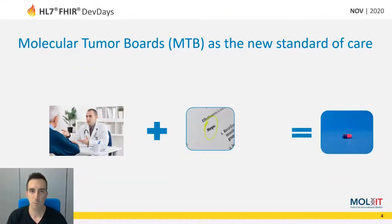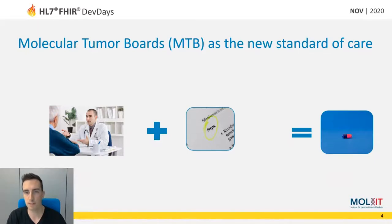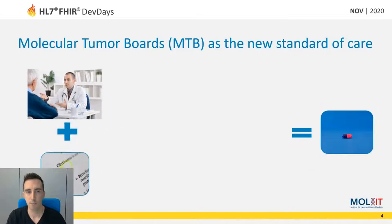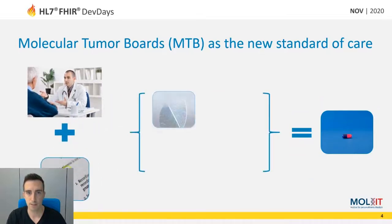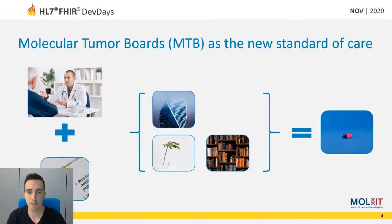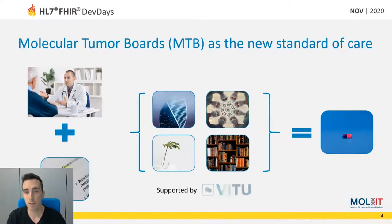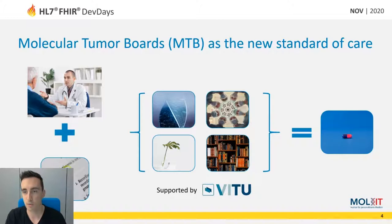Molecular tumor boards are emerging as the new standard of care in oncology. Where before a single physician would review some clinical guidelines and come to a treatment decision, we now have many more factors such as omics data, lifestyle data, available knowledge, and also the combined knowledge of a molecular tumor board — where we can arrive at a more informed treatment decision.